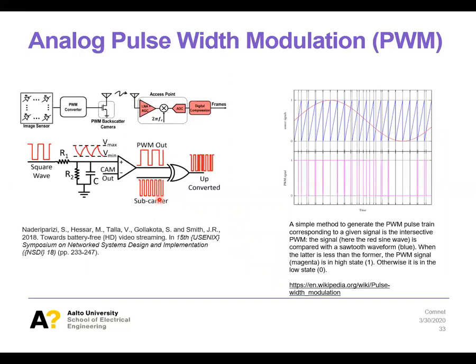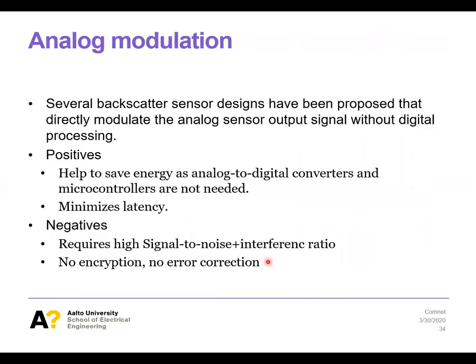The battery-free camera example used analog pulse width modulation. The image sensor — a camera grid of photodetectors — has its information modulated using pulse width modulation, which drives the impedance of the tags in an on-off keying fashion.